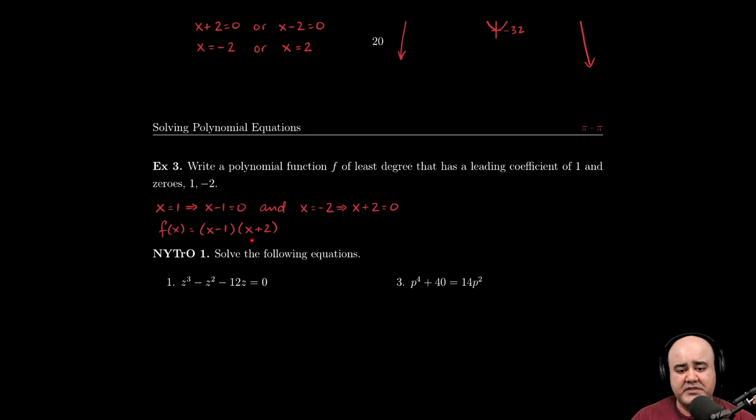Now, if the question requires, or if you're required to, or you feel like it, you can multiply this out to give the answer in standard form. But I'm hoping that everyone at this stage in the course is comfortable with foiling things out. This would be x times x, which is x squared, x times two, which is two x, negative one times x is negative x, negative one times two is negative two. So you would simplify this and rewrite it as x squared plus x minus two.